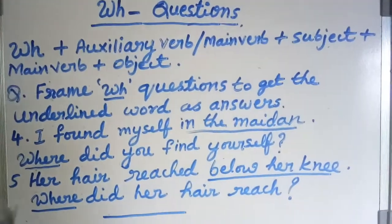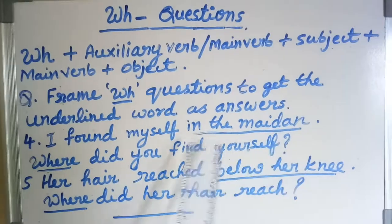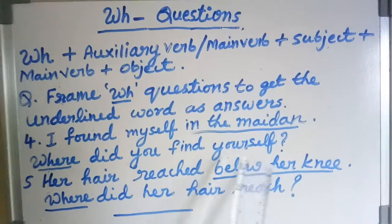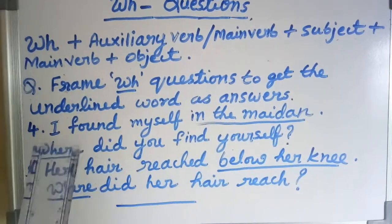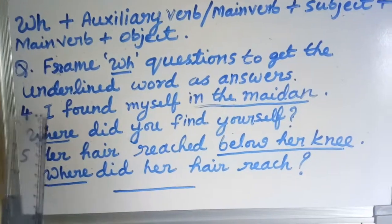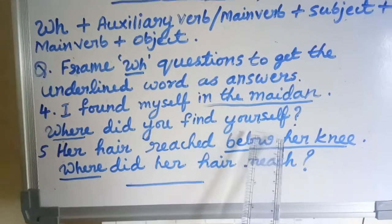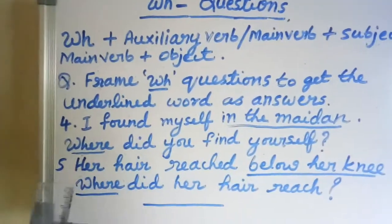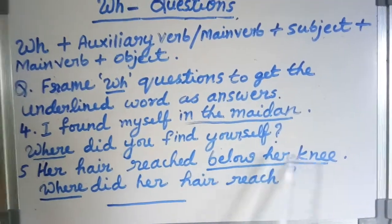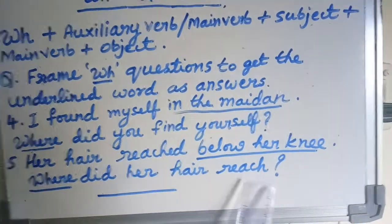Next example: 'I found myself in the maidan.' The underlined word is 'in the maidan.' Answer: 'Where did you find yourself?' Note: sometimes first person changes to second person, so 'I' changes to 'you' and 'myself' changes to 'yourself.' Next: 'Her hair reached below her knee.' Answer: 'Where did her hair reach?'